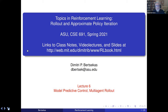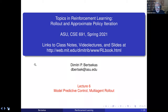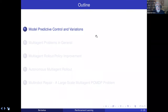Welcome to lecture six of our course on topics in reinforcement learning. In lecture four we covered approximation in value space, and in lecture five we went into rollout, which is a form of approximation in value space with the approximating function being the cost function of some base policy or base heuristic. Now we are going to look at two particular applications of rollout: model predictive control and multi-agent problems.